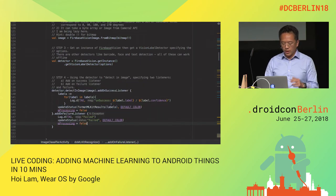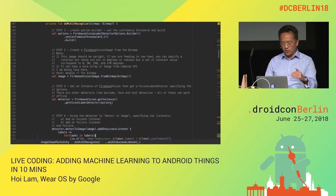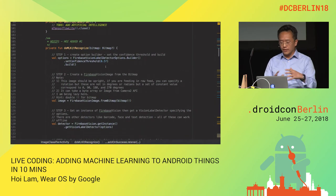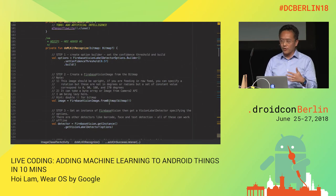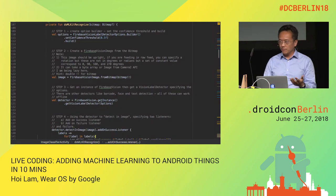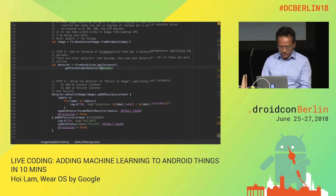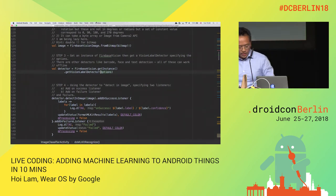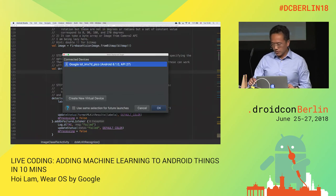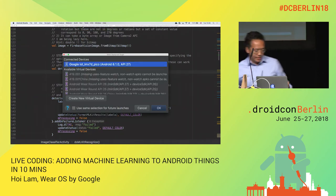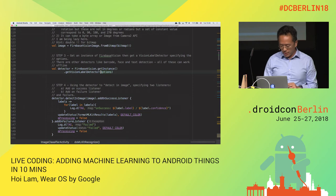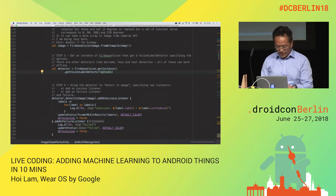So to review: we created the options, translated the image from a bitmap to a class format that Firebase understands, got the detector, and set the onSuccess and onFailure listeners. Let's see if it works — run the app, and hopefully it will deploy here.